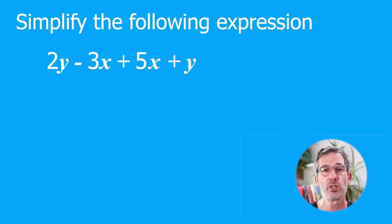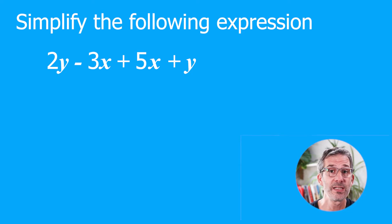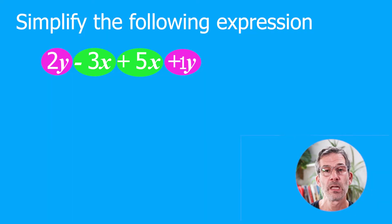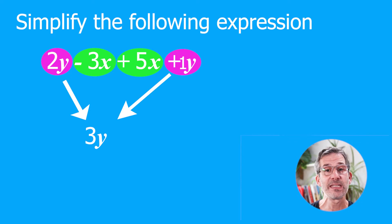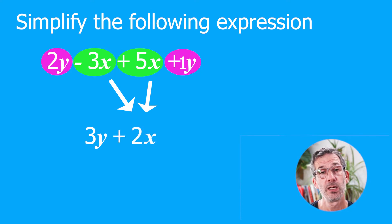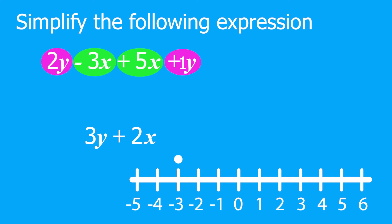Simplify 2y − 3x + 5x + y. We have two different like terms: those containing x and those containing y. Highlight them in different colours, including the sign in front. For the y's: 2y + y = 3y. For the x's: −3x + 5x = 2x (think of starting at −3 on the number line and moving up 5 places to reach 2). So the whole expression simplified is 3y + 2x.